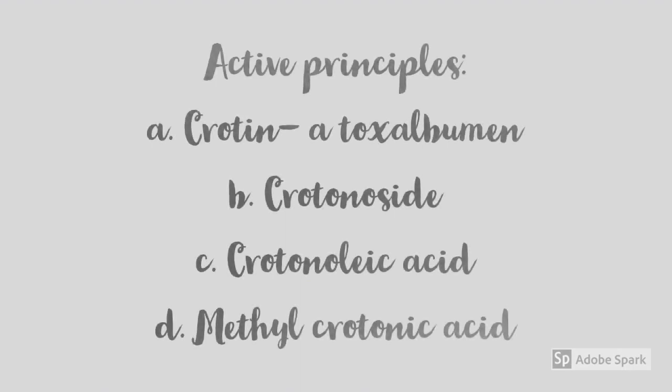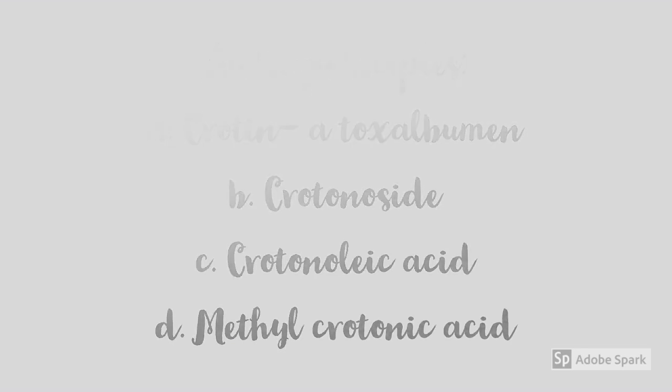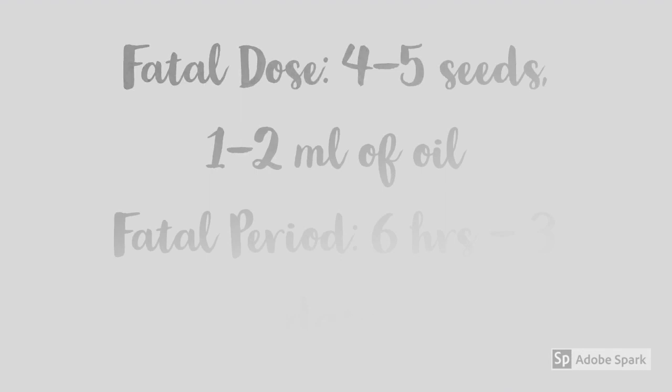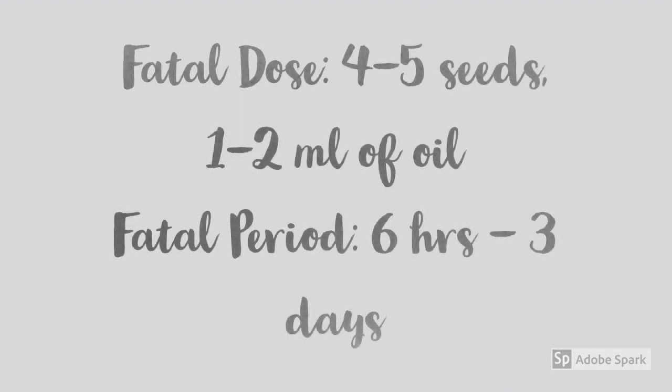The active principles that make the seed and oil of Croton tiglium poisonous are: (a) Crotein, a toxalbumin similar to that present in Ricinus communis; (b) Crotonoside, a glycoside less poisonous than Crotein; (c) Crotonolic acid; and (d) Methyl crotonic acid. Crotein and Crotonoside are present in the seed, whereas Crotonolic acid and Methyl crotonic acid are present in the oil.